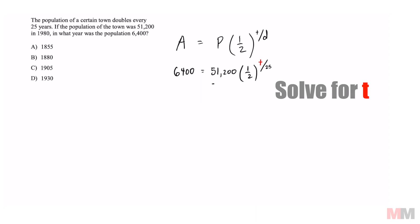To solve for T, the first thing we're going to do is divide both sides by 51,200. That is going to cancel this out right here. If you take a calculator and divide 6,400 by 51,200, it simplifies to one-eighth. The right side, we're going to just leave it the same: one-half to the T divided by 25.